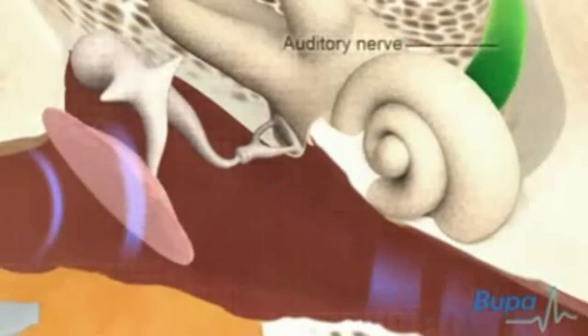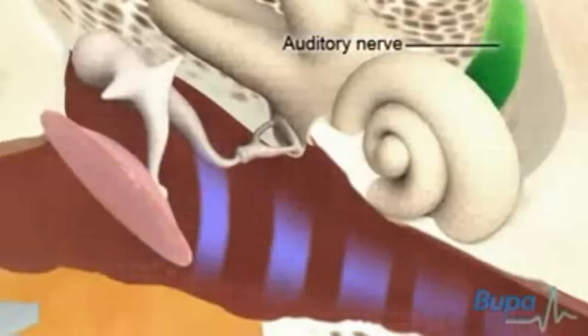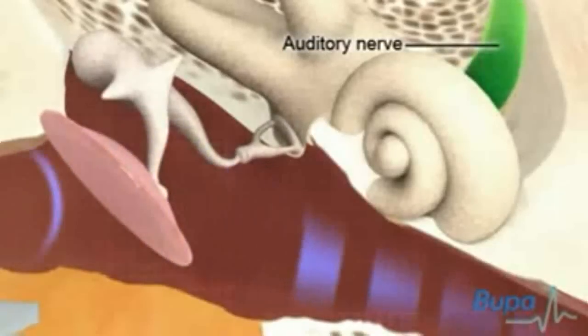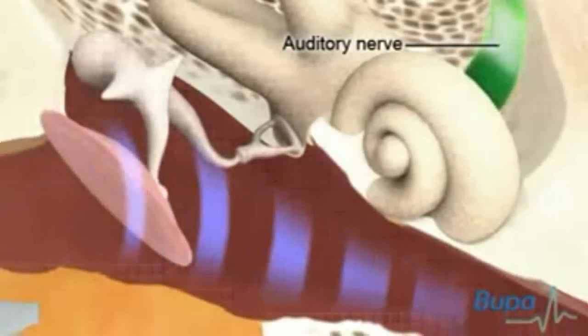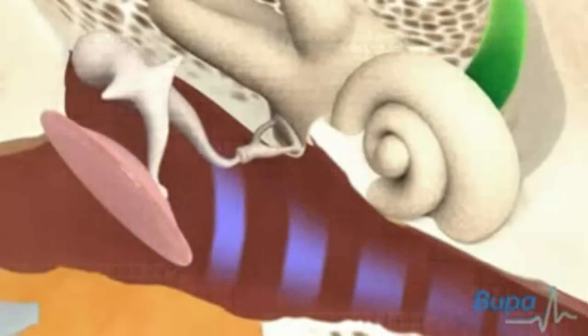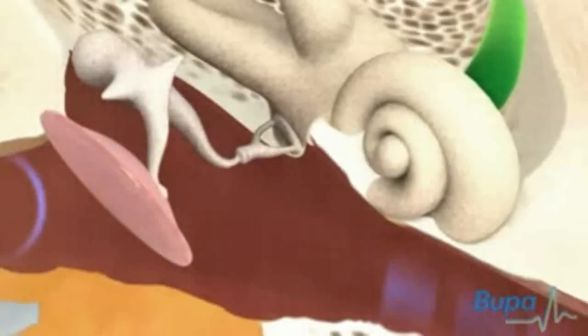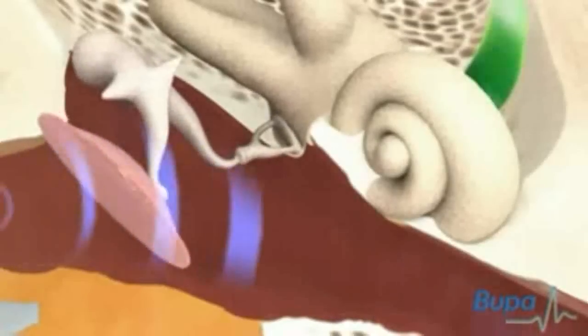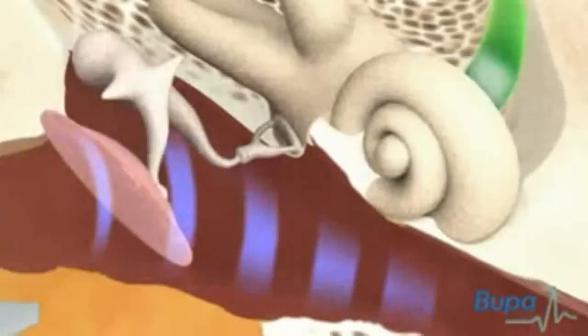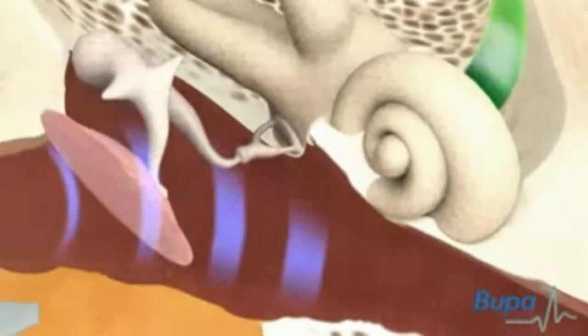When the hairs in the cochlea move, they cause an electrical signal to travel through the auditory nerve and to your brain. This electrical signal varies depending on the pitch of the sound and how loud it is. Your brain makes sense of this signal and so you hear the sound. Here we show the electrical signal moving through the auditory nerve.